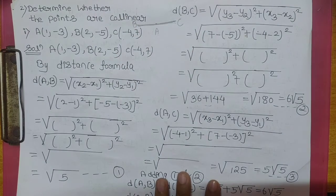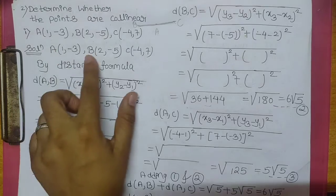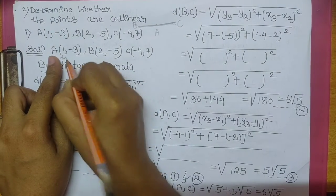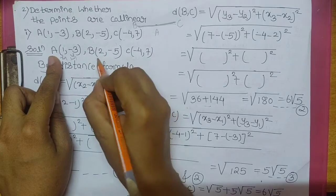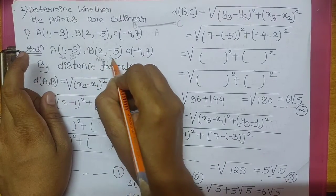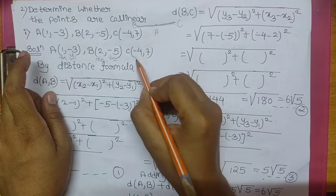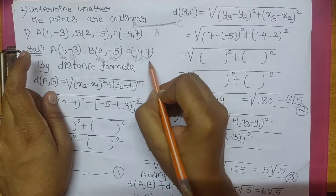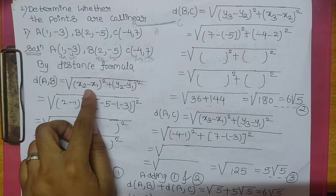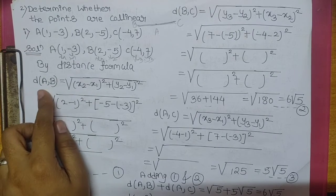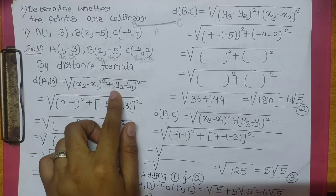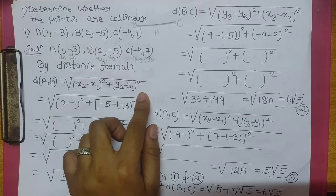Let's start. First of all, A is x1, y1; B is x2, y2; C is x3, y3. Distance of AB — so distance formula AB is square root of (x2 minus x1) ka square plus (y2 minus y1) ka square.